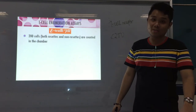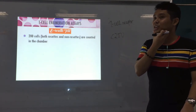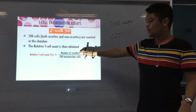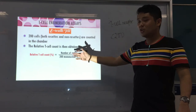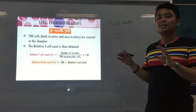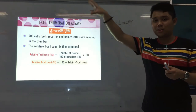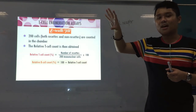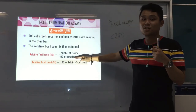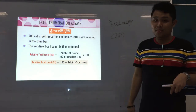For the calculation, we count 200 cells — both rosettes and non-rosettes. The relative T-cell count is: number of rosettes over 200 mononuclears times 100 — giving a percentage. For the relative B-cell count, it's 100% minus the relative T-cell count. There should be approximately two times more T-cells than B-cells circulating.